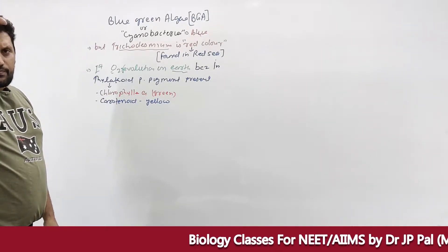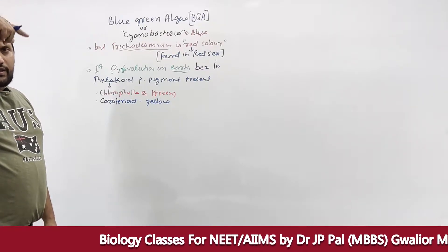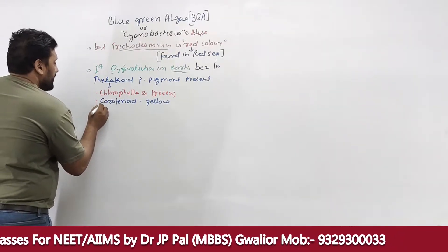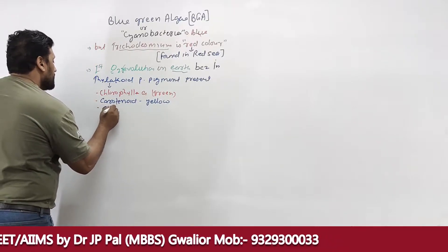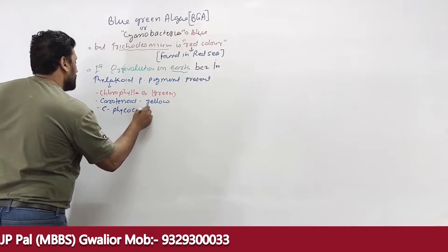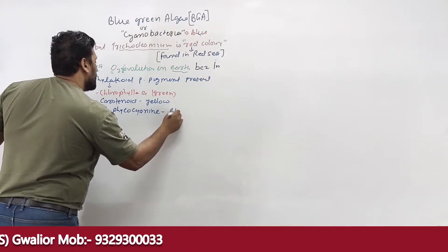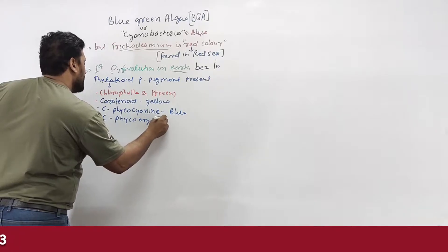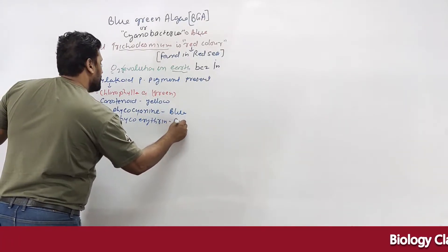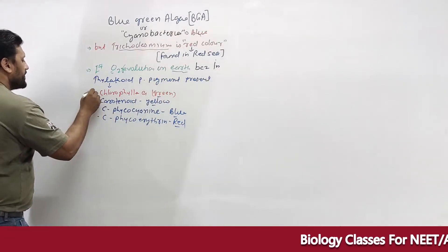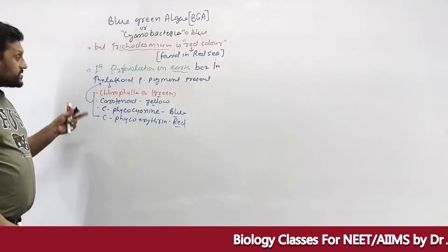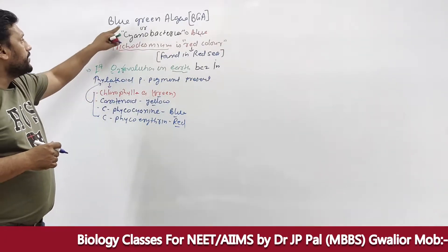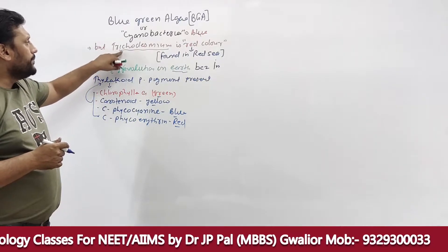The thylakoid in BGA has no granum and no membrane boundary. The photosynthetic pigments present are: carotenoid (yellow), c-phycocyanin (blue), and c-phycoerythrin (red). Because of these pigments — red, blue, yellow, green — BGA is not always blue; it may also appear red.